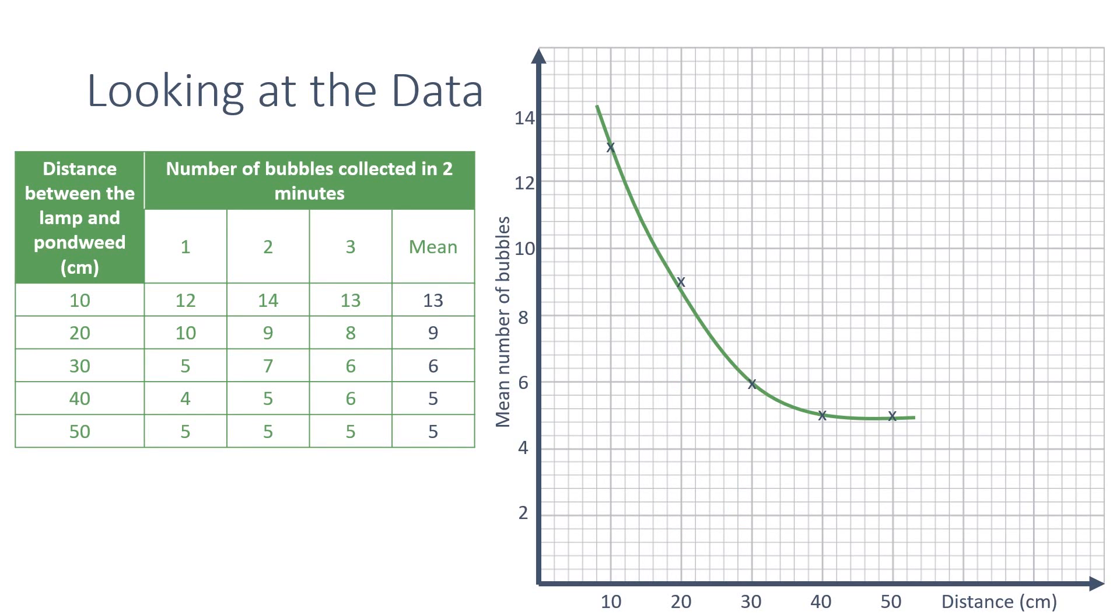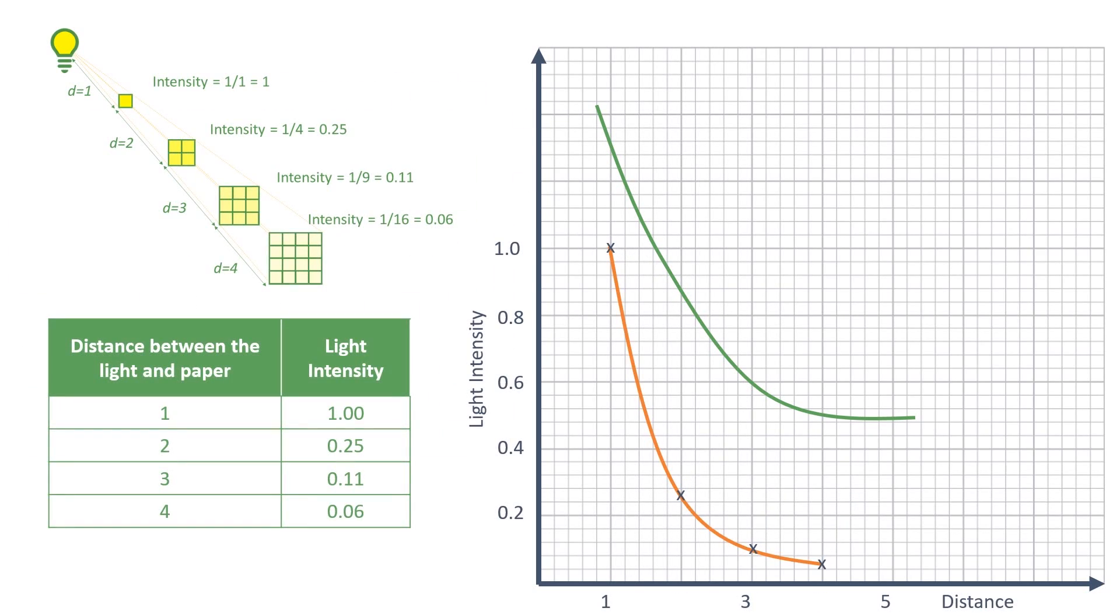And we can apply this scientific understanding to the data that we collected earlier. So if on the same graph, we plot the theoretical data from the light intensity experiment, you can see the orange line which represents this data has a very similar pattern and shape to the green line that represents the experimental data.